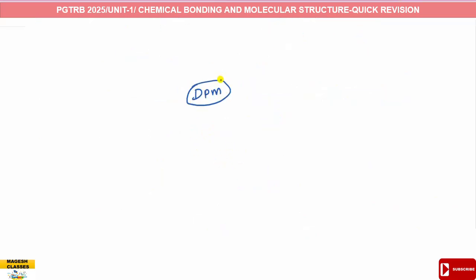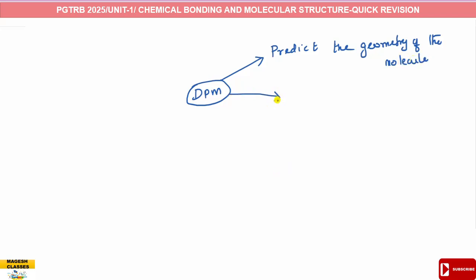Dipole moment is used to predict the geometry of the molecule. Dipole moment also helps in determining the polarity of molecules. Homoatomic molecules have zero dipole moment.